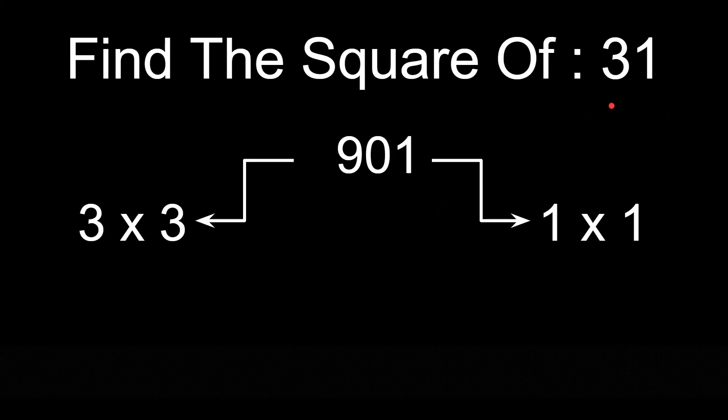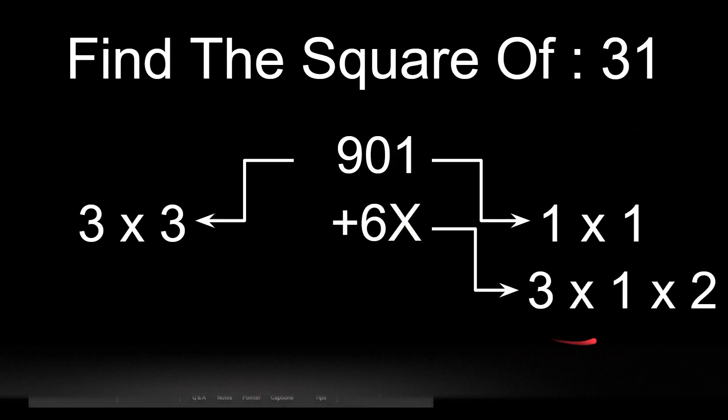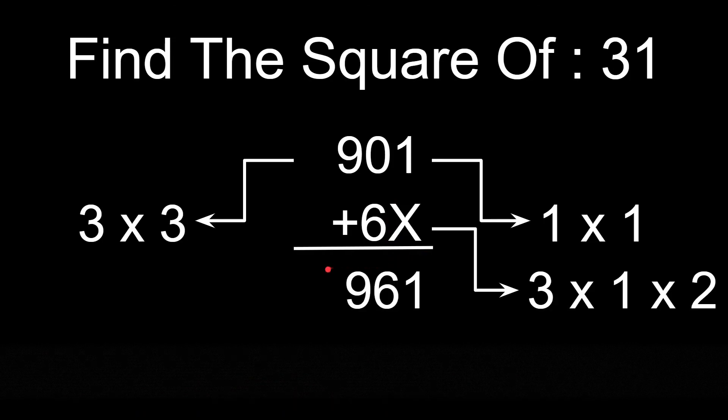And then we will add 3 into 1 into 2. That is the product of digits multiplied by 2 from the 10th place. So it is 3 into 1 is 3, into 2 is 6. And we have added it from the 10th place leaving the unit's place as x. And our answer is 961.